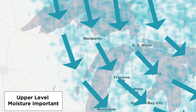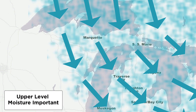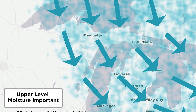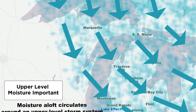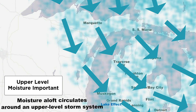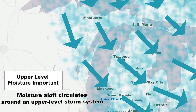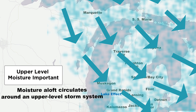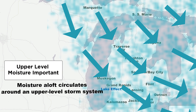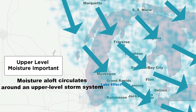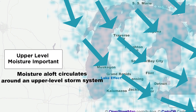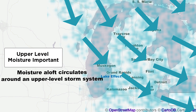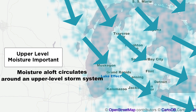That's not the only factor — there are two other factors. First, there has to be some moisture in the air. That cold Canadian dry air coming down will squelch any lake effect snow. And the second thing, the big one: the wind direction.